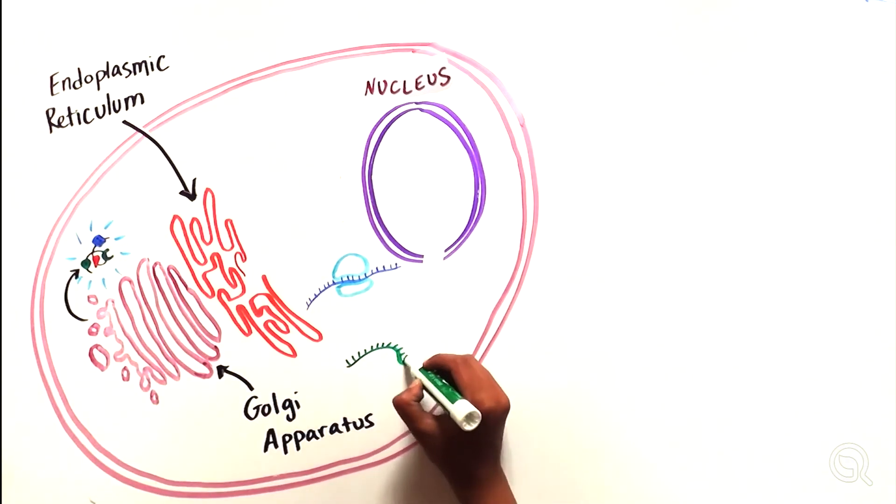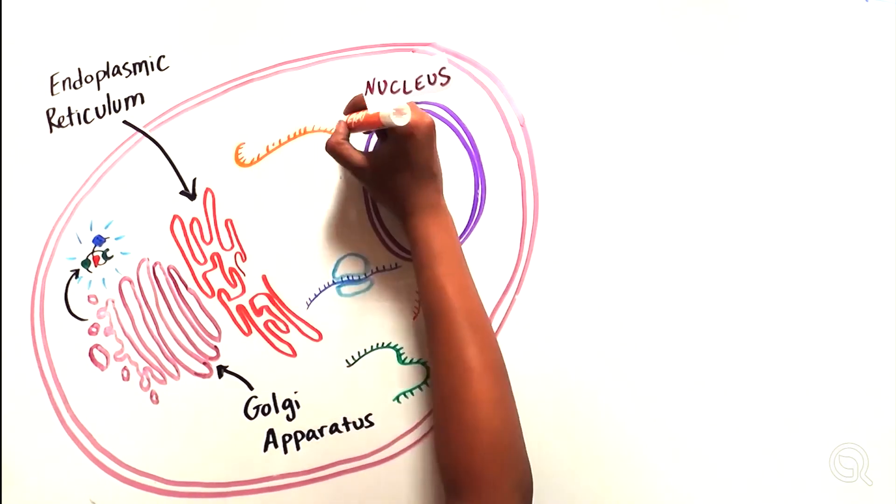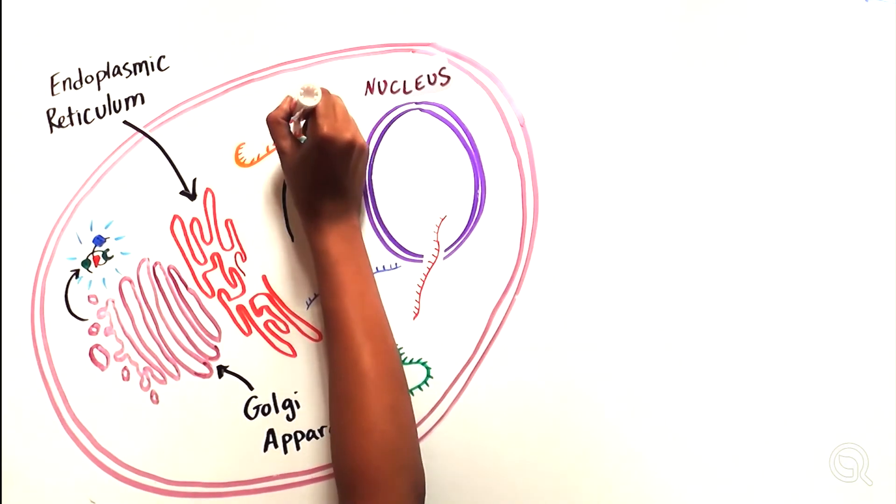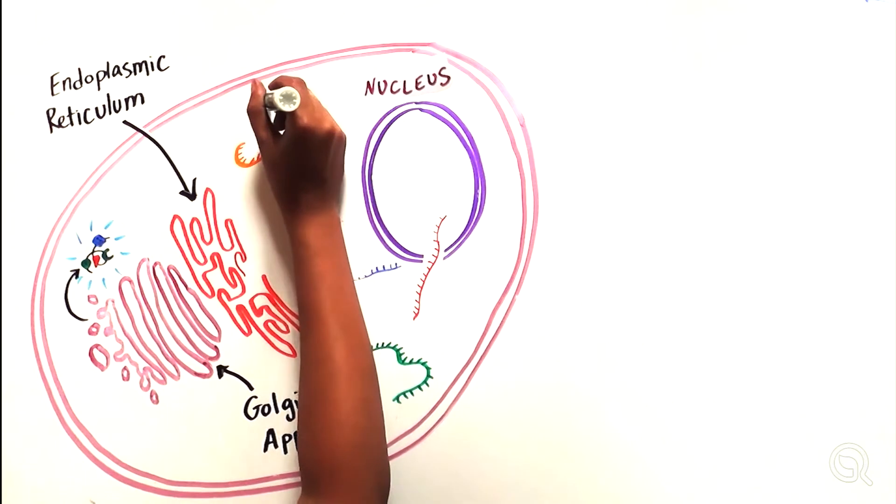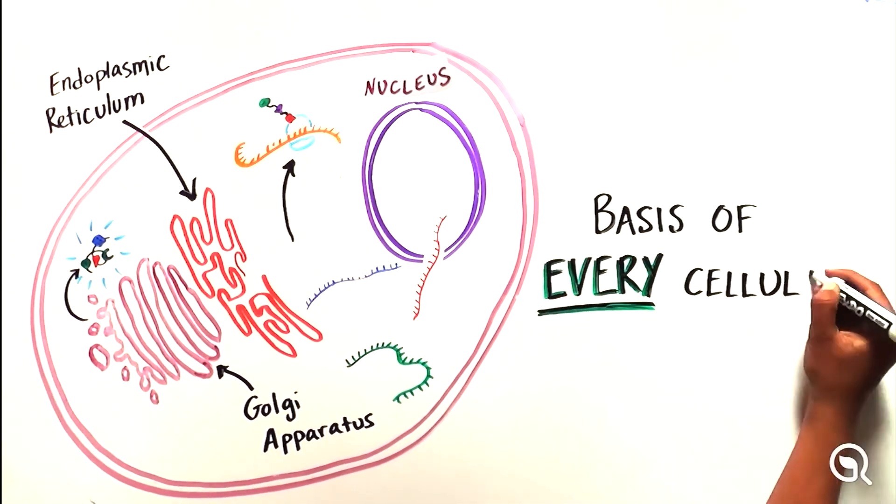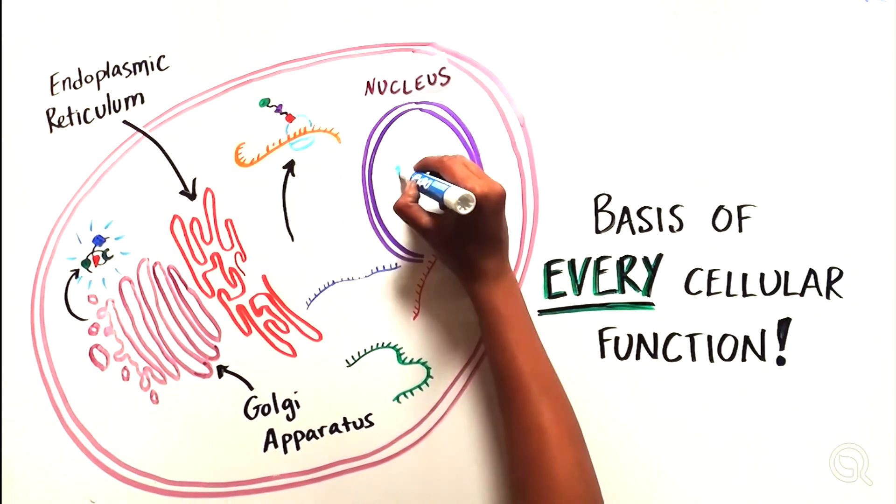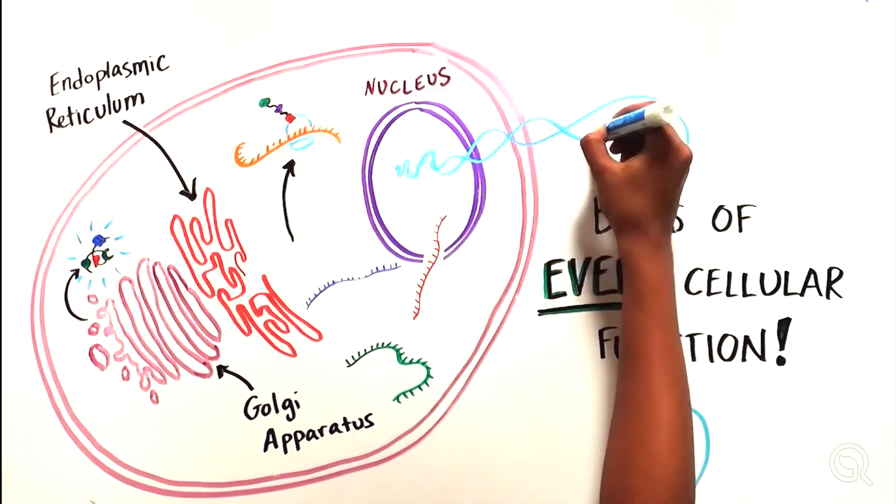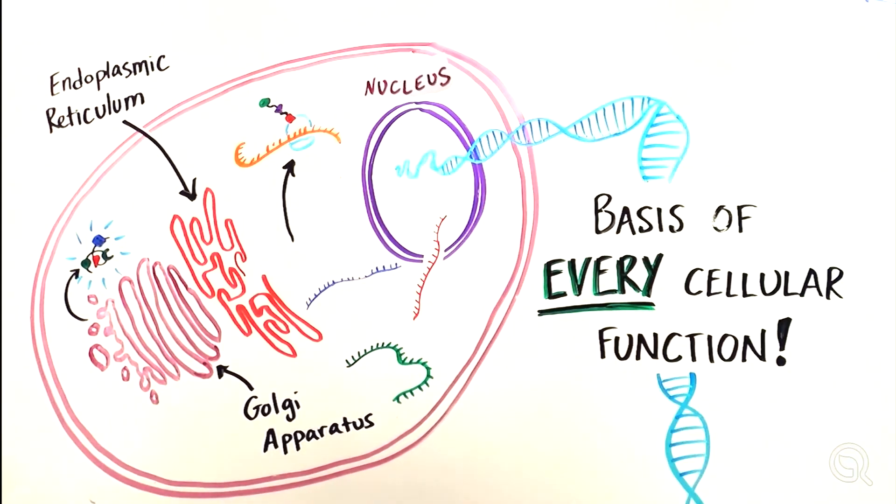Meanwhile, the ribosomes are reused to take part in the translation of other mRNA molecules. This elegant, complex process is the basis of every single cellular function in our bodies and helps ensure everything runs according to our molecular instruction code, our DNA.